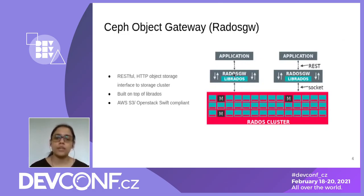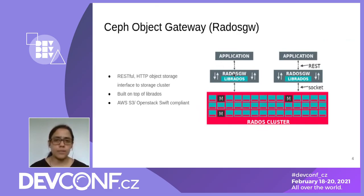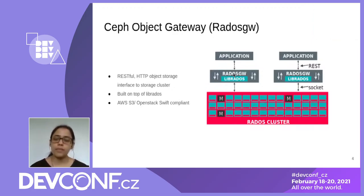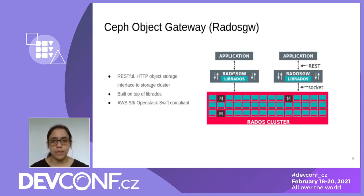Rados Gateway is an object store client to the Ceph cluster that exposes RESTful, S3, and Swift APIs. Librados is the API it is built on top of. Rados Gateway handles things like user accounts, ACLs, and buckets. It supports two HTTP frontends: one is CivetWeb and the other is Beast. The data is stored in buckets in the form of objects. Buckets have a flat namespace, unlike a file system hierarchy.